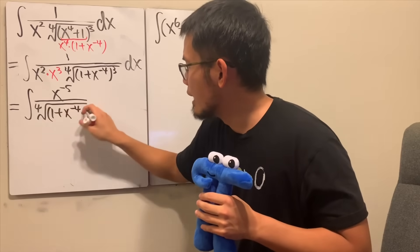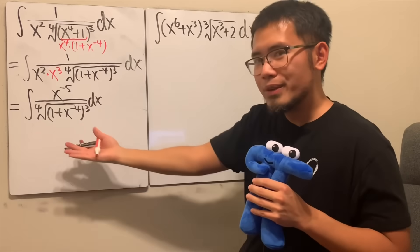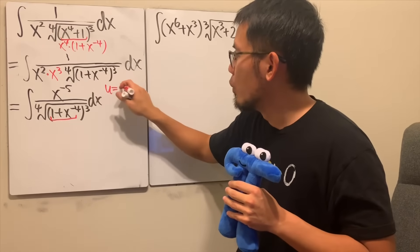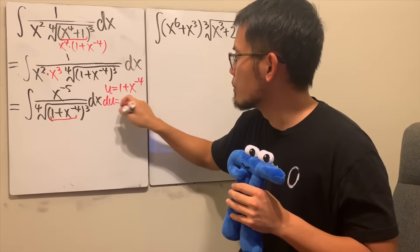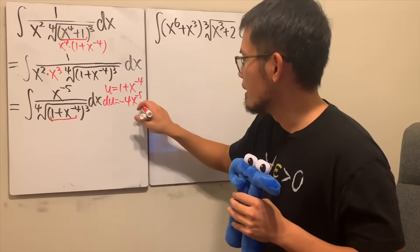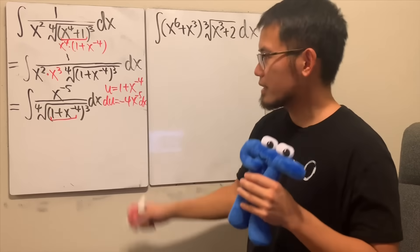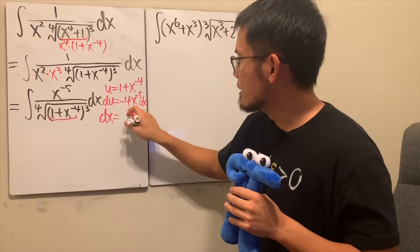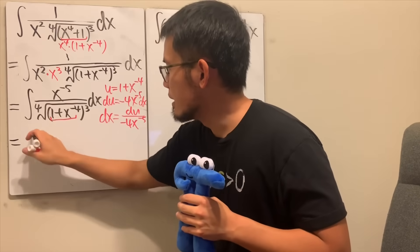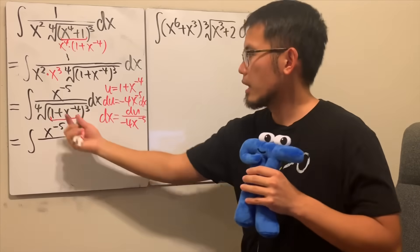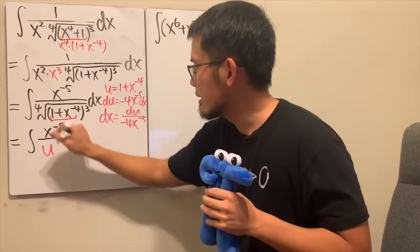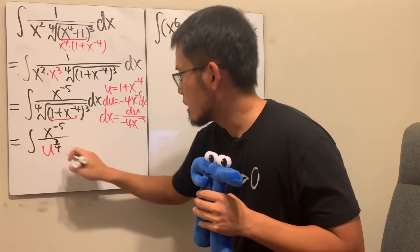This becomes the integral of x to the negative fifth power over the fourth root of one plus x to the negative four, raised to the third power. This is great because now we can just let u equal to the inside. Let u equal one plus x to the negative four. Then du equals negative four times x to the negative five — and we have negative five right there. So we isolate dx as du over negative four x to the negative five.